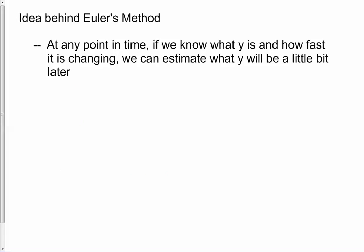Let me just take a minute to talk about the core idea behind Euler's method and then we'll apply it to an example. And the idea is very simple. At any point in time, if we know what the function is equal to, and we know how fast it is changing, of course that means knowing the derivative, then we can estimate what y will be a little bit later.